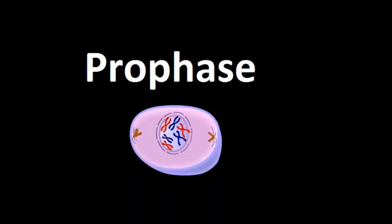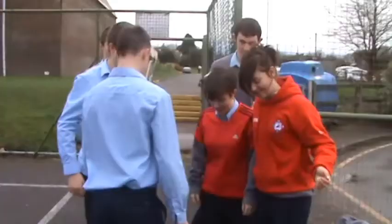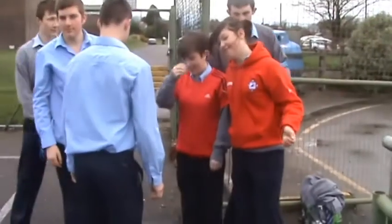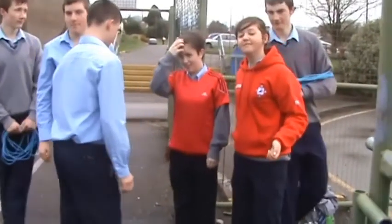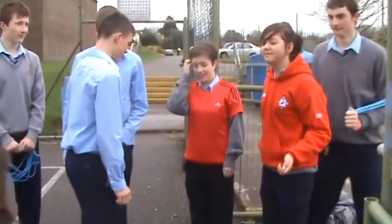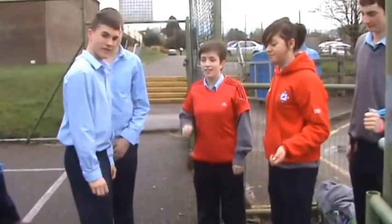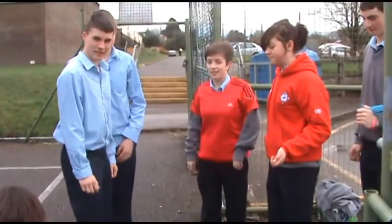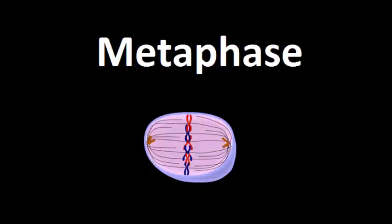The first step in mitosis is prophase. Chromosomes appear more evident. They are no longer on top of each other. They are shorter and fatter and more obvious. The centrioles move and separate to the poles of the cell.